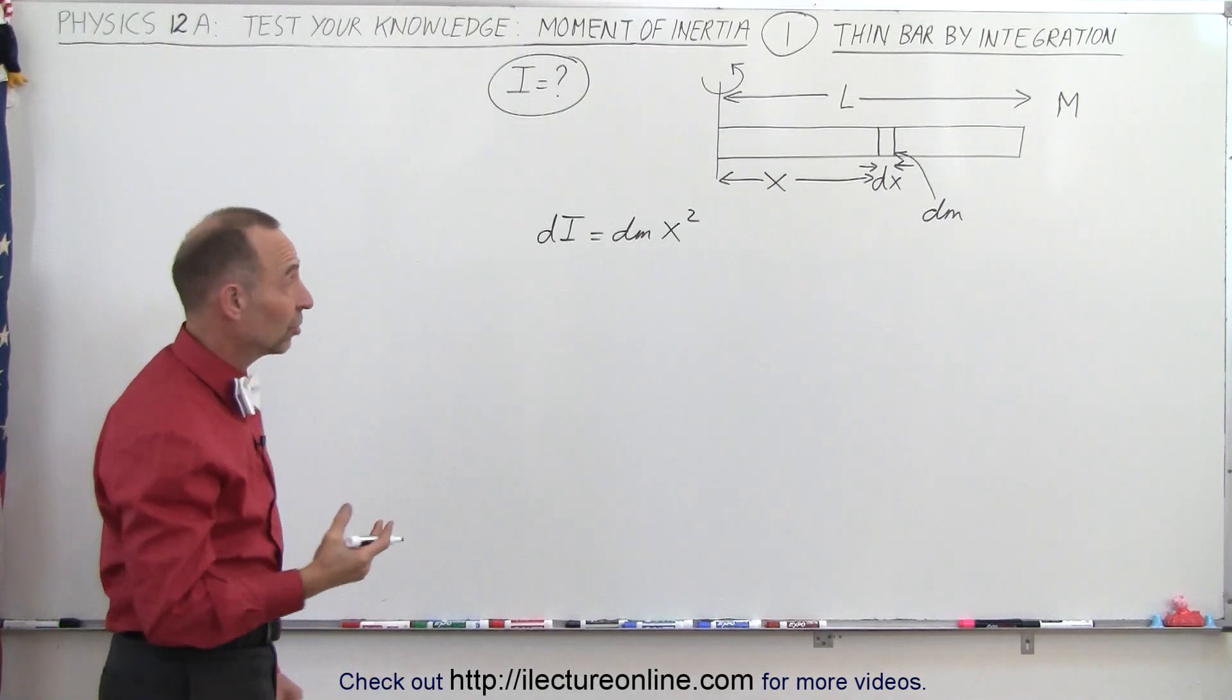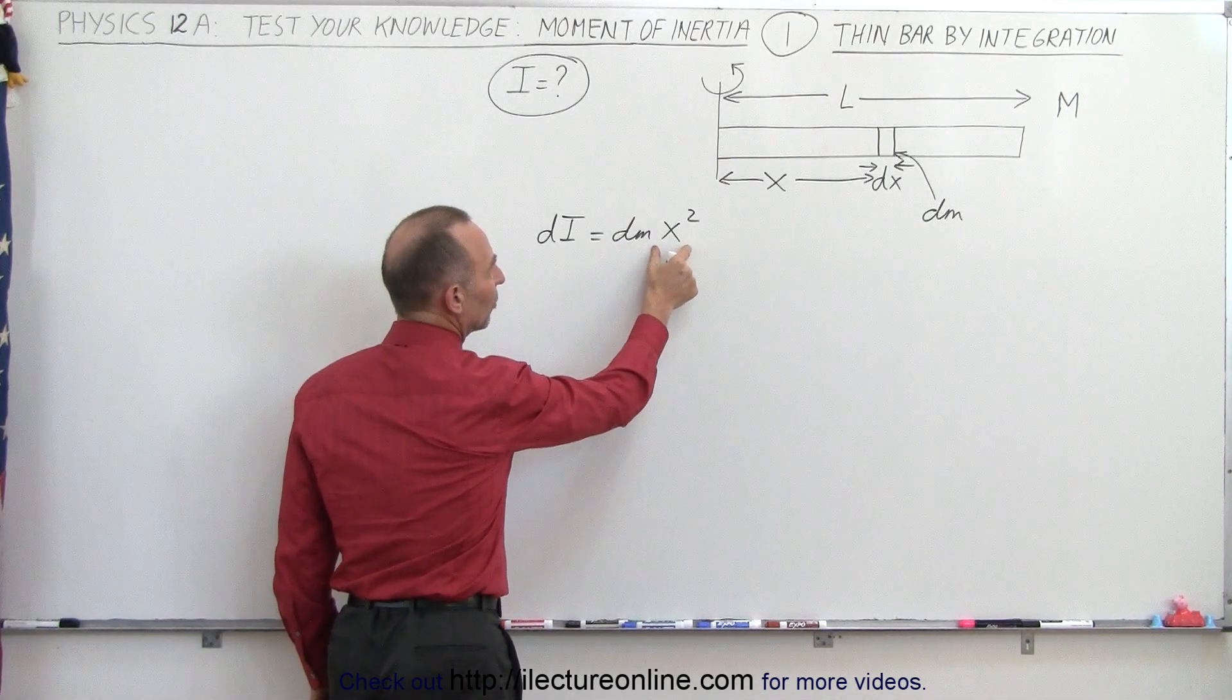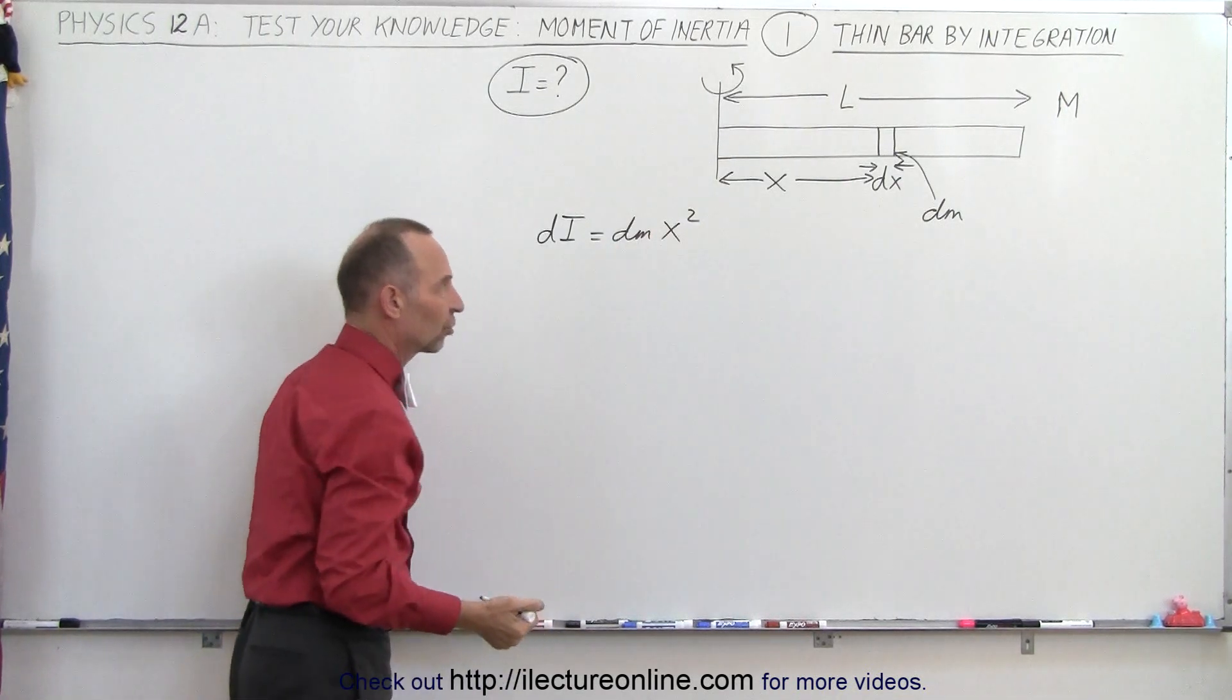So we use the equation I equals mr squared, where m is a small little mass dm, and the distance is x, and therefore it's x squared.